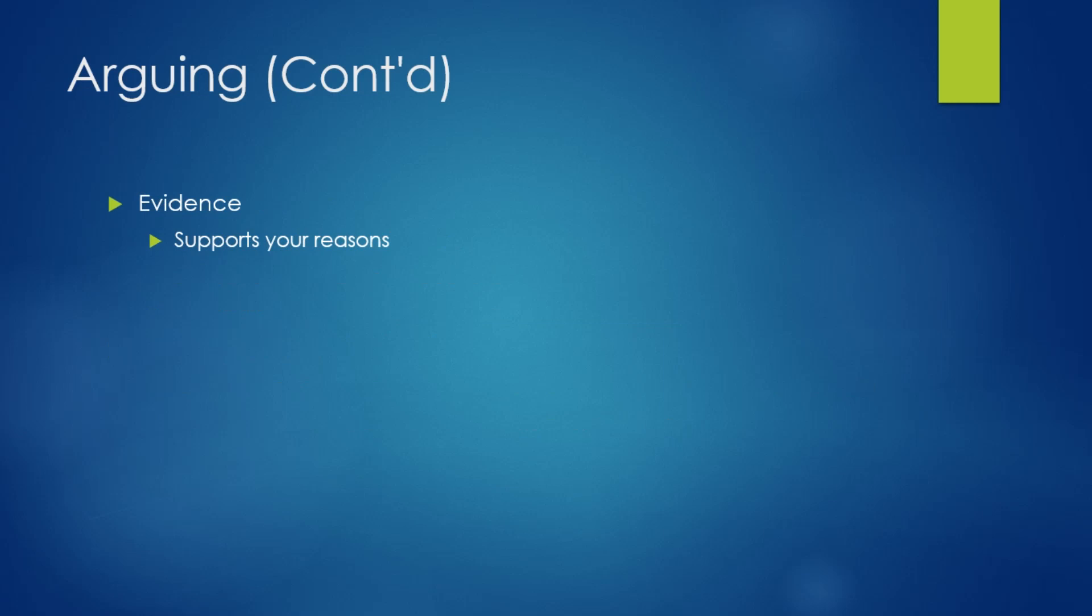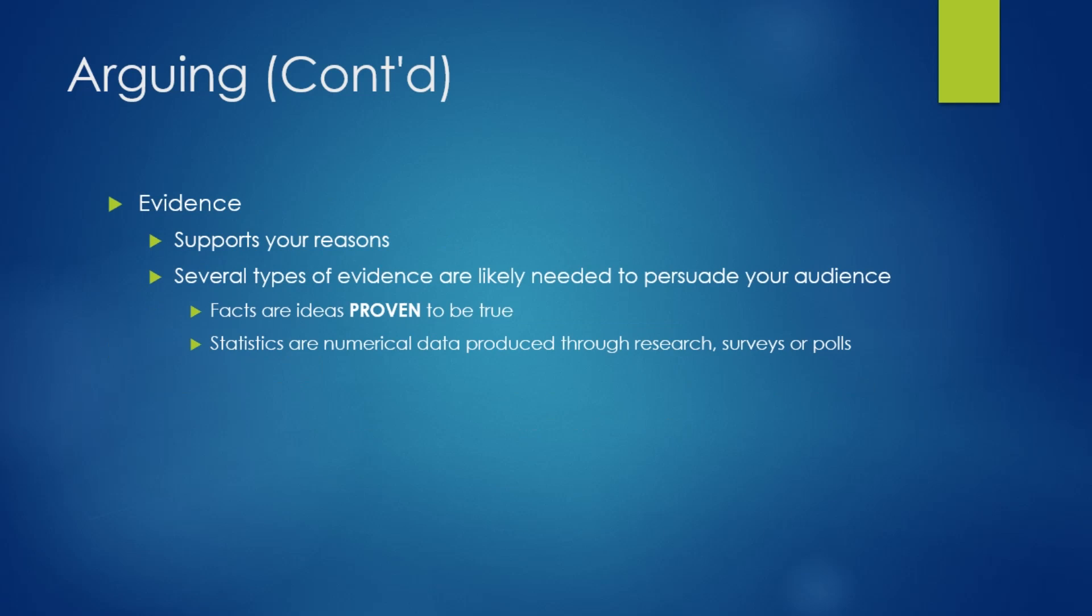You have to use evidence to support your reasons. You can't just pull your evidence out of thin air and you can't just make statements that aren't backed up by evidence. Now several types of evidence are likely needed to persuade your audience. Facts are those things which have been proven to be true. They're indisputable. Statistics, those are numerical data produced through research surveys or polls. And they have to be relevant. I can find a very interesting statistic that says four out of five people think boxing is a rough sport, well that's nice. Does that actually support or refute the claim that it was safer a hundred years ago? No.